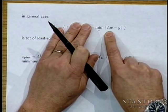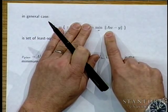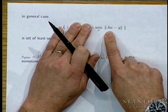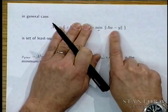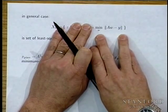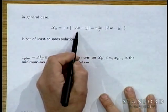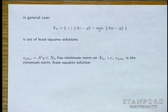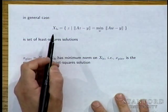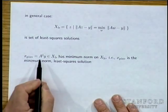When A is not full rank and you want to minimize ‖AW − y‖, there is still a set of solutions — an affine set — the set of least squares solutions. Among these, you can ask for the minimum-norm solution. That is exactly what A† y gives you.